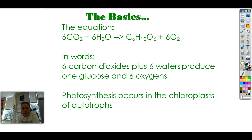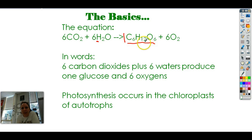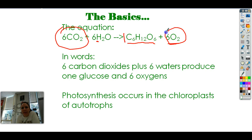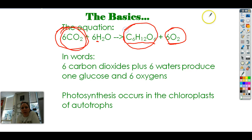That is the equation for photosynthesis. Basically what that's attempting to tell you is that it takes six molecules of carbon dioxide — the stuff that we breathe out — and six molecules of water to make one molecule of glucose, C6H12O6, and six molecules of oxygen. So for every six CO2 we breathe out, a plant can turn it into six oxygens for us to breathe in. For every six waters a plant takes in, it makes one glucose for us to eat. This is why we water our plants.